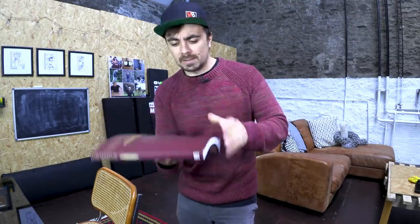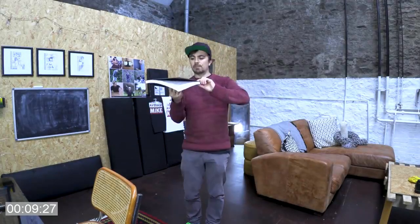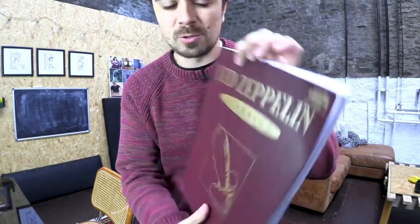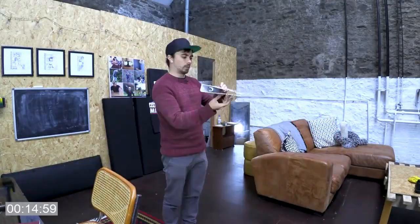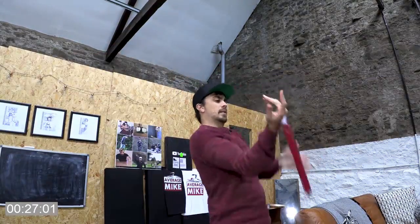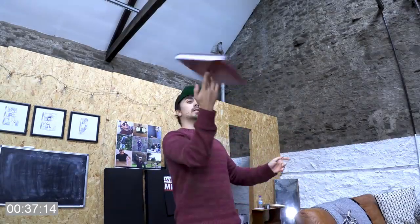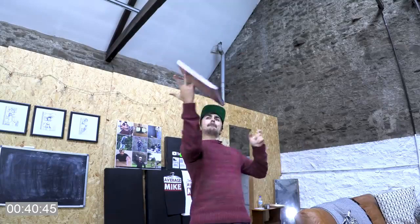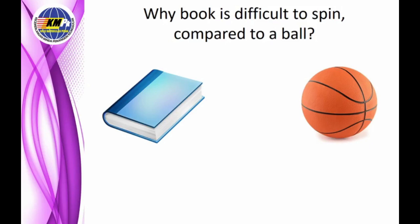The presenter tries relatively thick books with some flexibility so the book sags around the finger, and also tries a thin hard book such as a Zeppelin songbook. From the video demonstration, the question is: why is the book difficult to spin compared to the ball — is it because of the shape, or because of the mass?